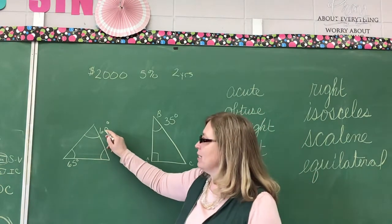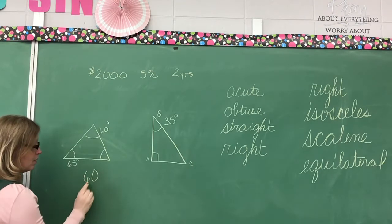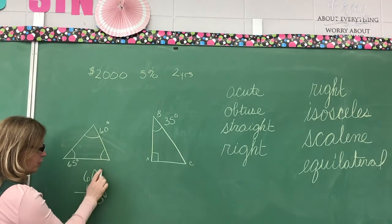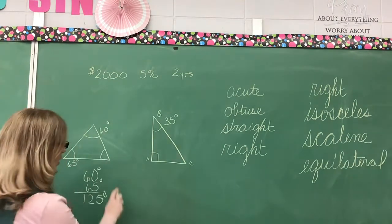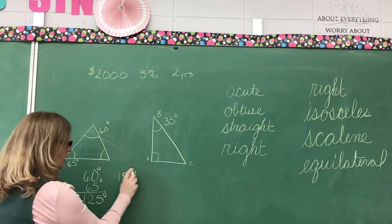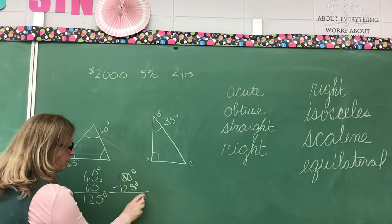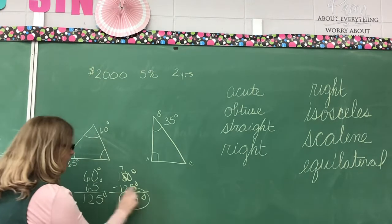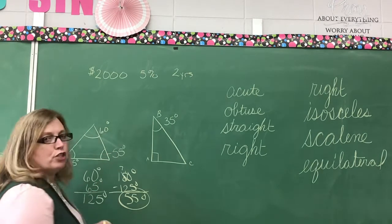So I'm going to take this and I'm going to say 60 plus 65. That equals 125 degrees. Now what do I do? Take 180 degrees and subtract 125 degrees from it. When I do that, I'm going to get 55 degrees. This angle is 55 degrees.